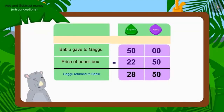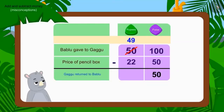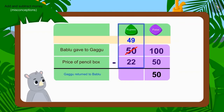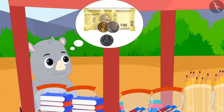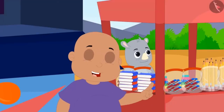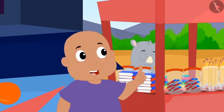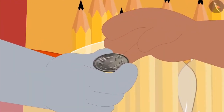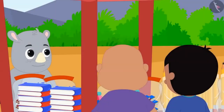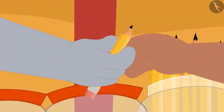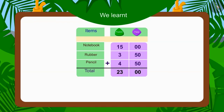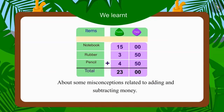Therefore, the amount returned by Gaggu to Bablu was wrong. Children, the correct answer by subtracting the rupees is: Gaggu was to return 27 rupees 50 paise to Bablu. Bablu quickly did the math and found that Gaggu gave him 1 rupee more, and promptly returned 1 rupee to Gaggu. Gaggu was happy to see the honesty of those children and gave them a pencil each for free. In this video, we saw some common mistakes related to adding and subtracting money.